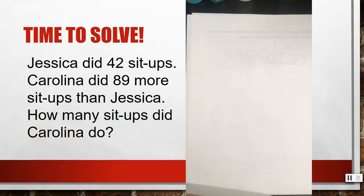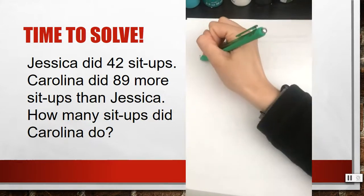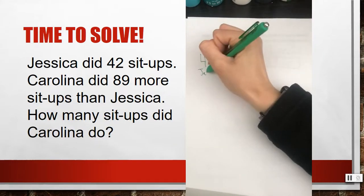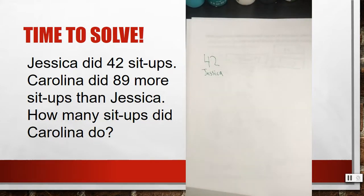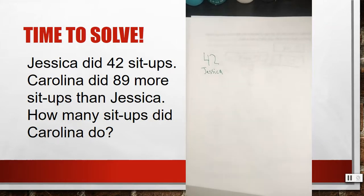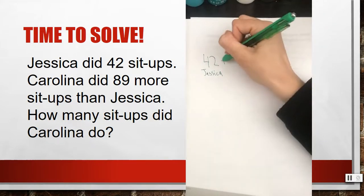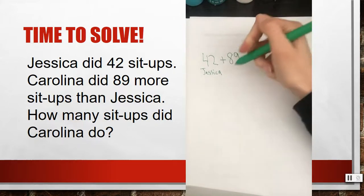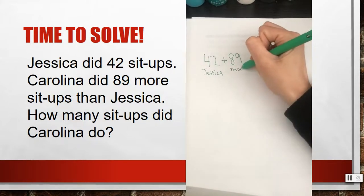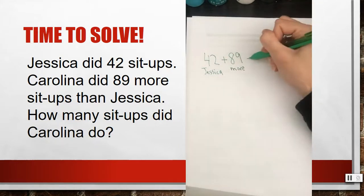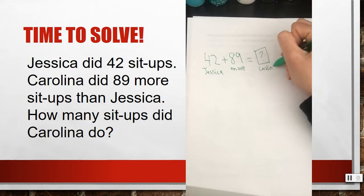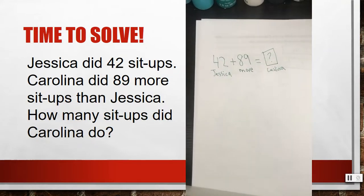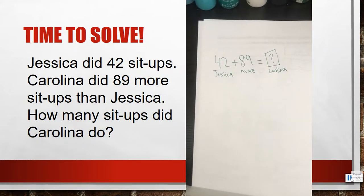So for today's problem, we know that Jessica and Carolina both did sit-ups. Jessica did 42 sit-ups. That's Jessica. Carolina did 89 more than that. So should I add 89 or subtract 89 if she did 89 more than Jessica? We should add 89 more because Carolina did 89 more than Jessica. And then we're trying to find how many Carolina did — we don't know.